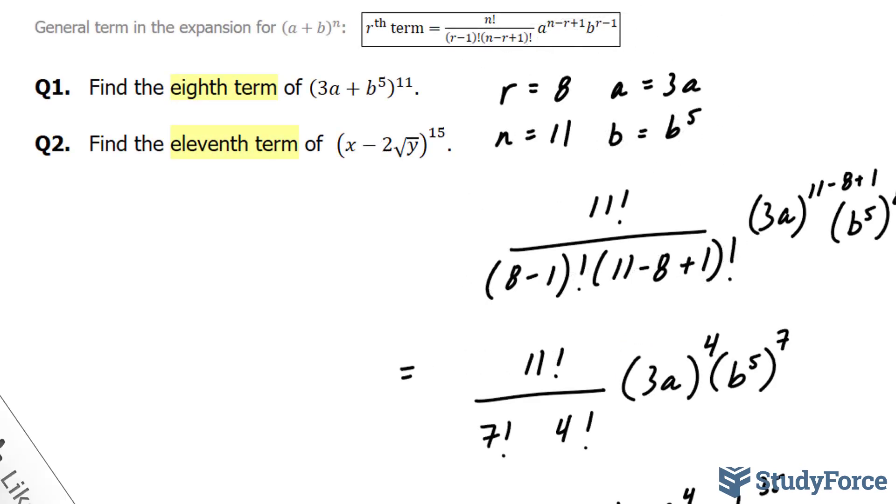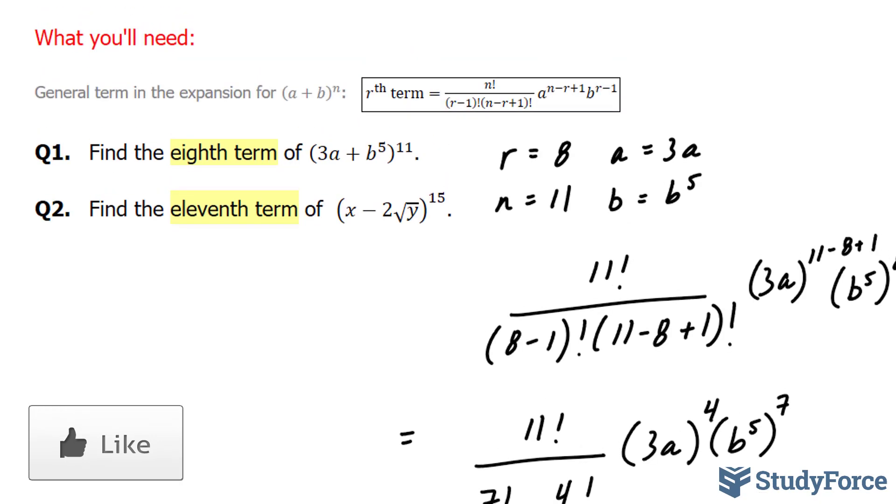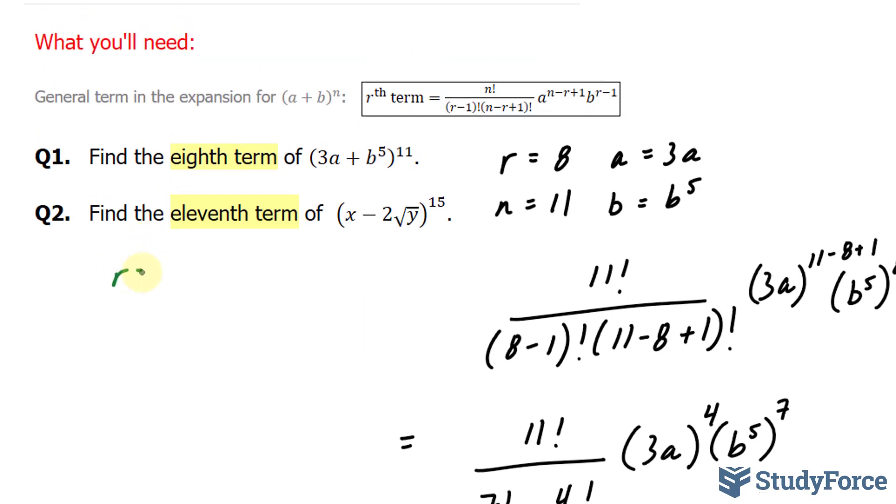Let's move on to question 2. In question 2, they ask us to find the 11th term of this binomial. Here, our r is equal to 11, n is equal to 15, a is equal to x, and b is equal to negative 2 square root of y.